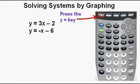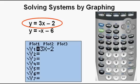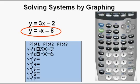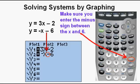Press the key at the upper left — the key that says y equals — to access the function editor. First we enter the equation y equals 3x minus 2. Then we enter the second equation y equals negative x minus 6. Be sure to enter the negative sign in front of the x, and make sure to enter the minus sign between the x and the 6. It's easy to mix these negative and minus signs up and get a bad result.